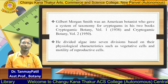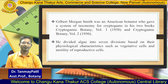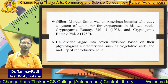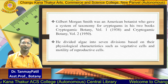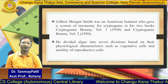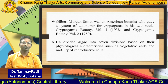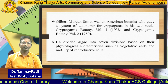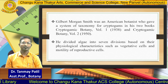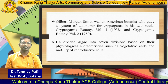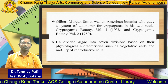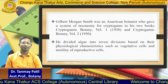Gilbert Morgan Smith was an American botanist who gave a system of taxonomy for cryptogames in two books: Cryptogamic Botany Volume 1 and Cryptogamic Botany Volume 2. He divided algae into seven divisions based on their physiological characteristics such as vegetative cells and motility of reproductive cells.